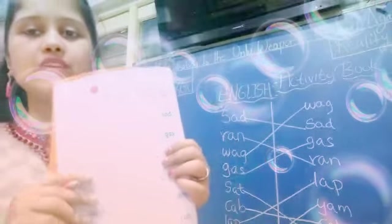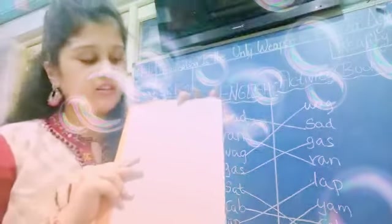S A D — sad. So you have to match. S A D — sad. Now ran. R A N — ran. Where is ran over here? R A N — ran. Now wag. W A G — wag.